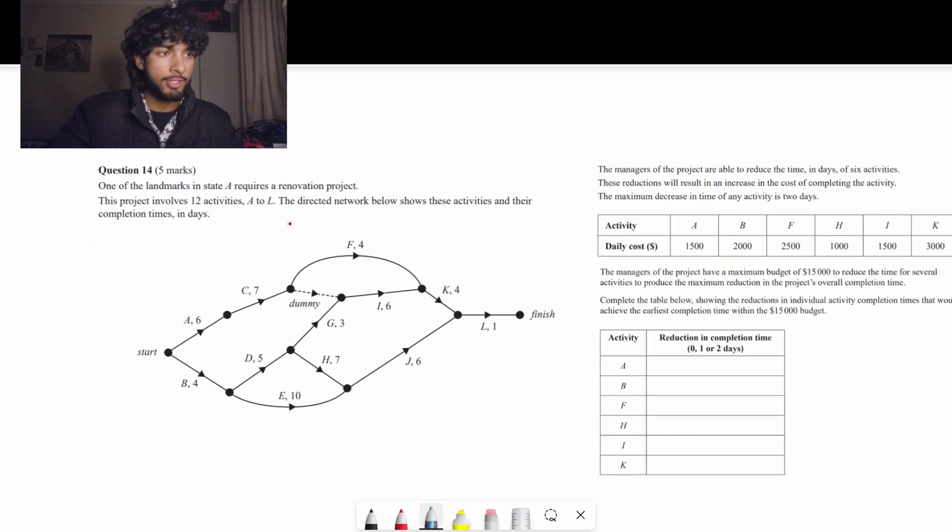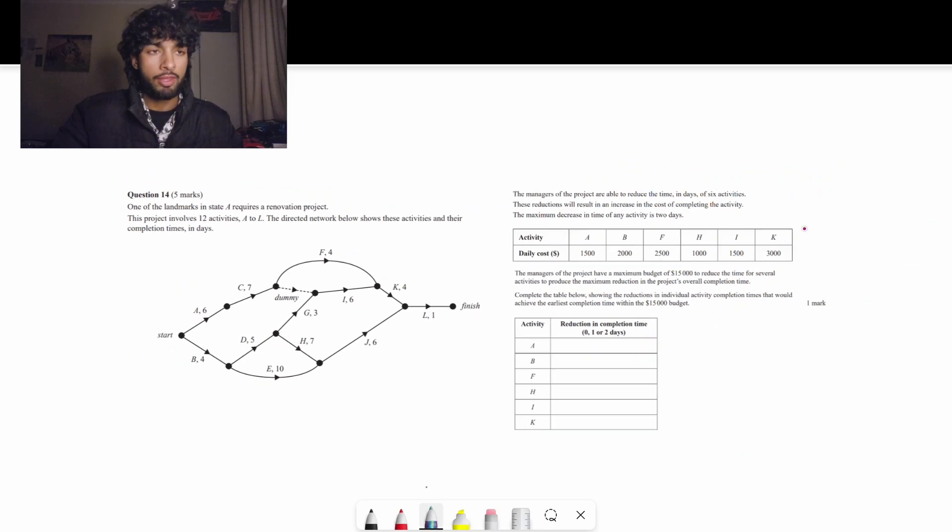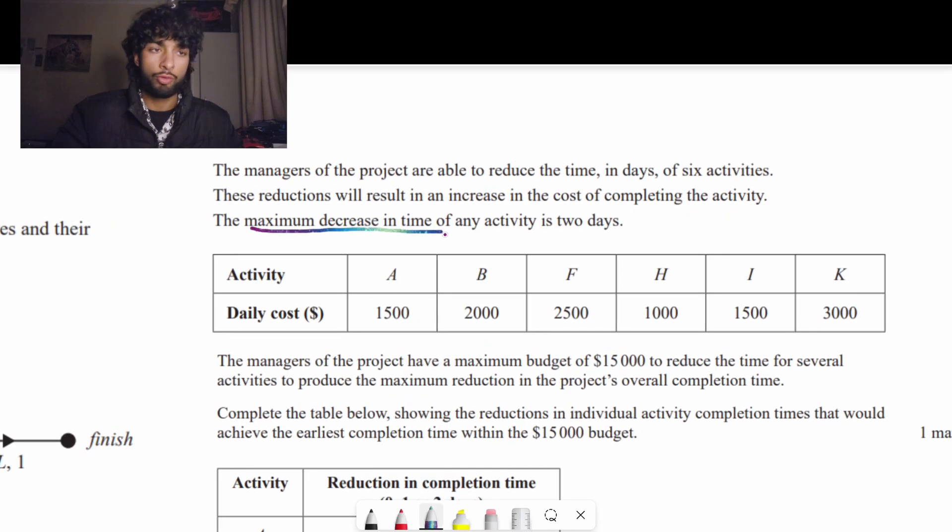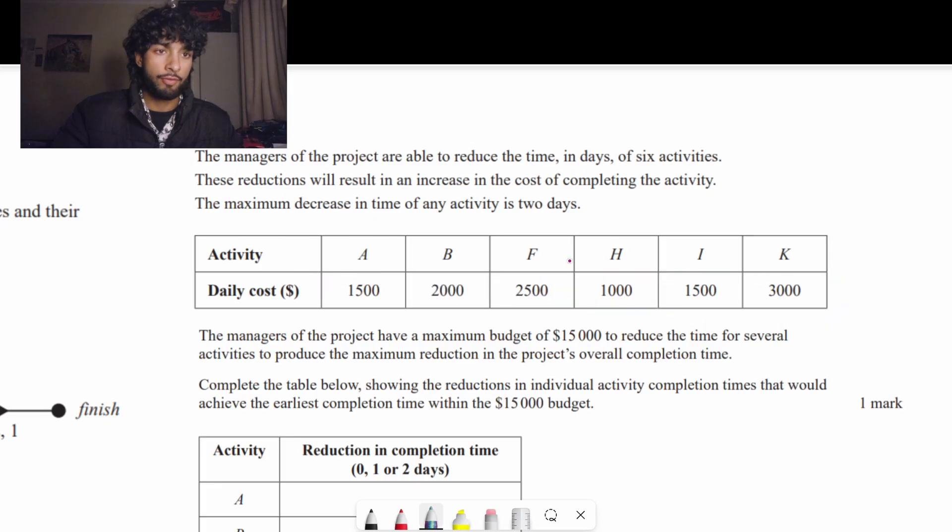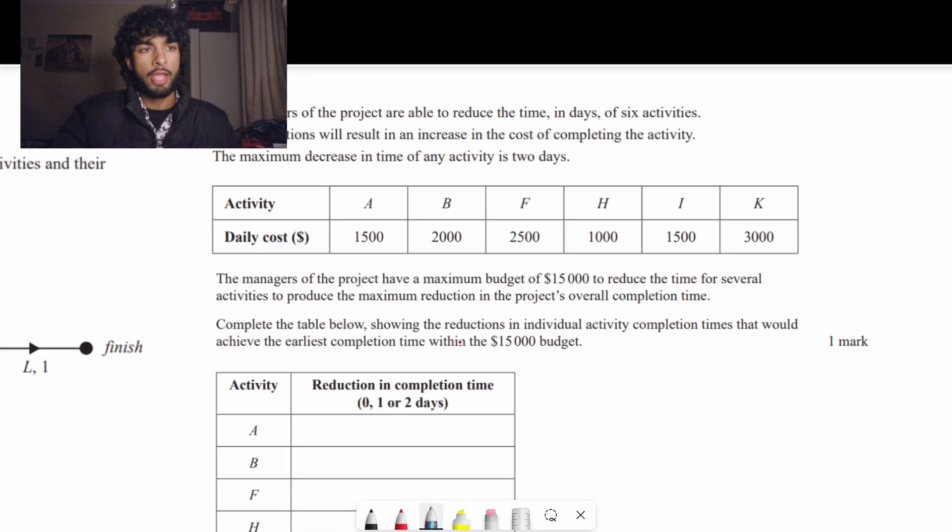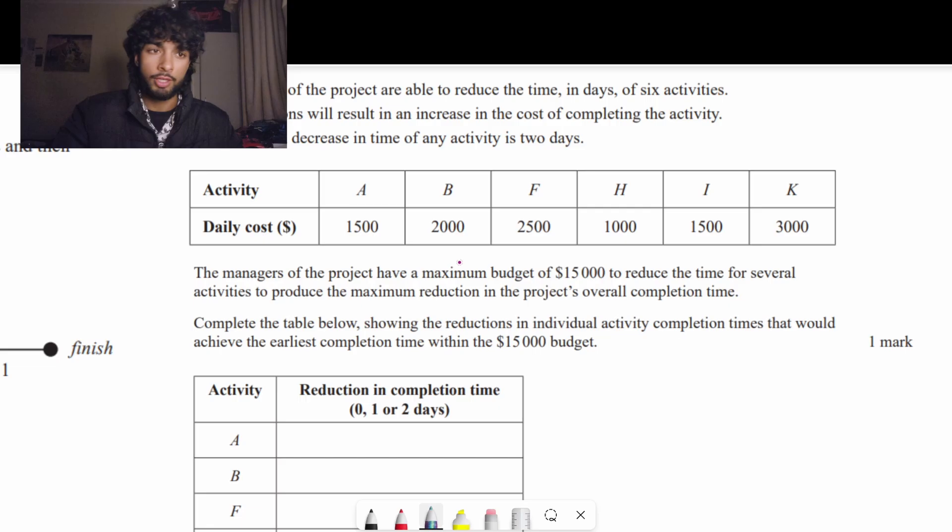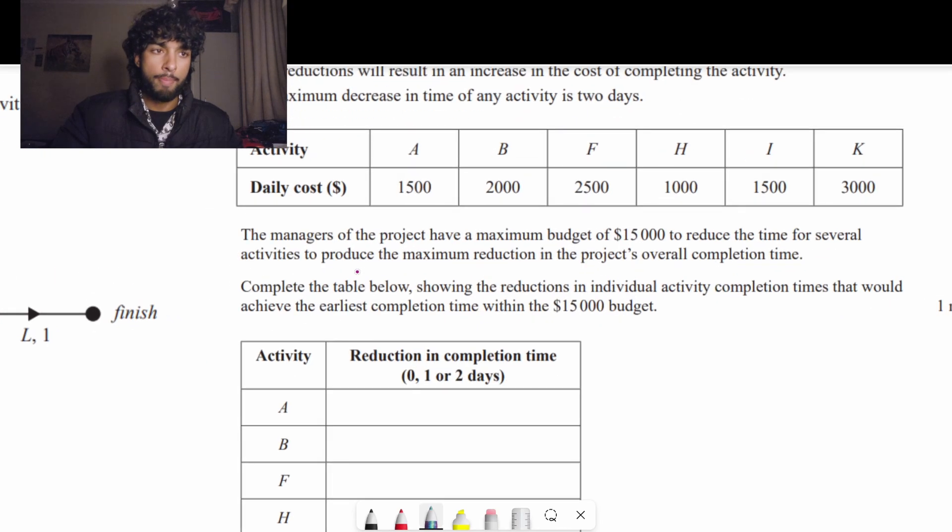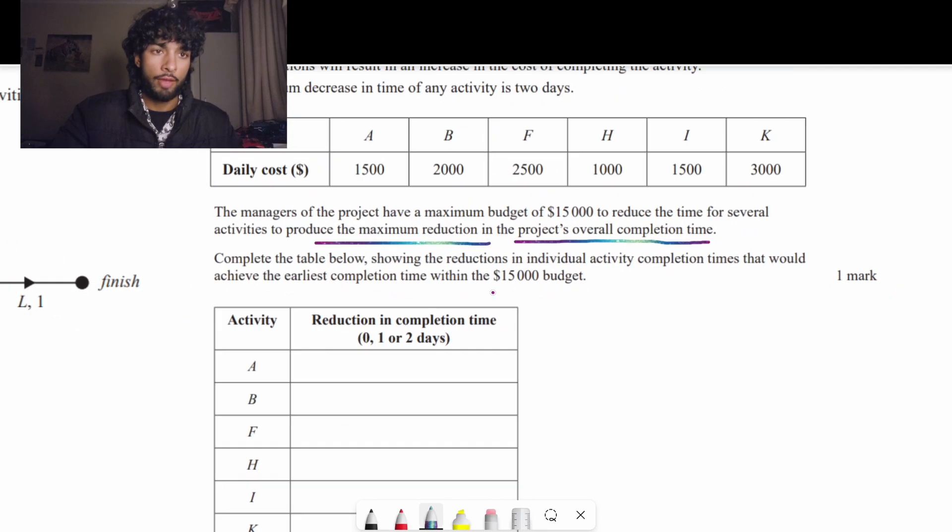There are 12 activities in this network and the manager of this project can reduce the time of six of these activities and the maximum they can decrease a certain activity is two days. These are all the activities and they have different costs as you can see and they have a maximum budget of $15,000 to reduce the time for several activities.